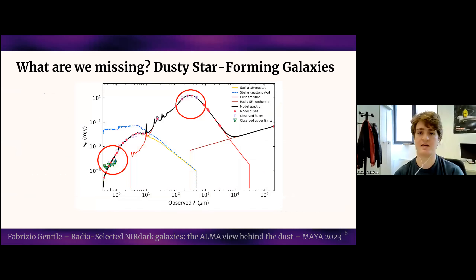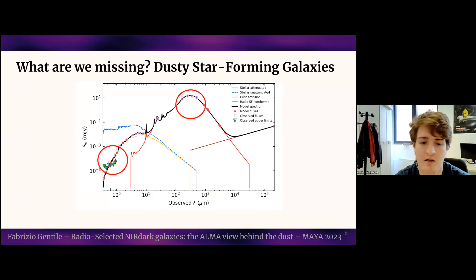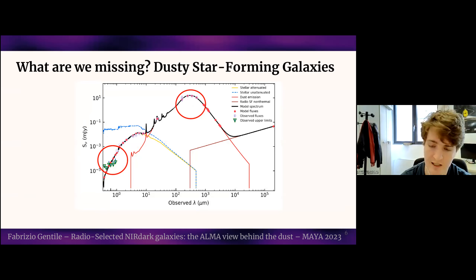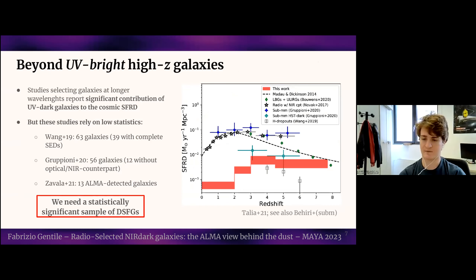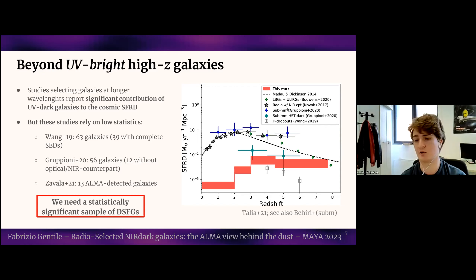One such population could be the so-called dusty star-forming galaxies. You can see here the SED of a normal star-forming galaxy, but if we have a significant amount of dust, the fluxes in the optical and infrared regime can become invisible — below the detection limit of our survey. All this energy is re-emitted at longer wavelengths in the infrared and sub-millimeter. Studies selecting galaxies in the infrared and millimeter find a different, flatter behavior of the star formation rate density at higher redshift, which could solve the problem of missing progenitors of massive galaxies around redshift three.